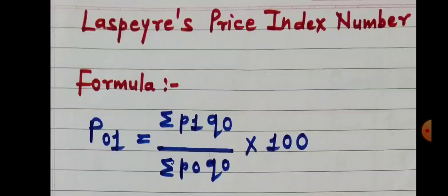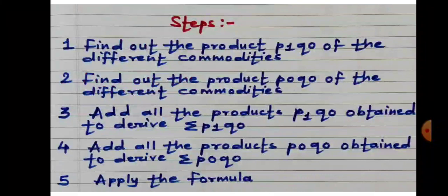Let us see how to construct Laspeyres price index number. For that, we have to know the formula: P01 is equal to Sigma P1Q0 divided by Sigma P0Q0 into 100. The various steps are: Number 1, find out the product P1Q0 of the different commodities, i.e. P1 multiplied by Q0. Second step, find out the product P0Q0 of the different commodities, i.e. P0 multiplied by Q0.